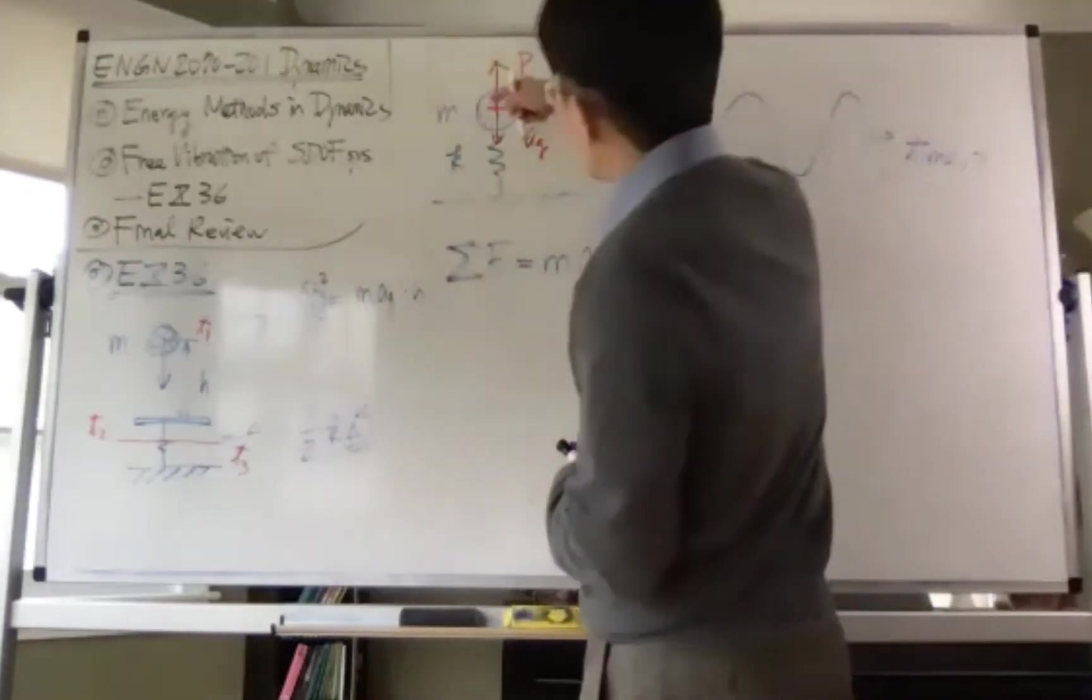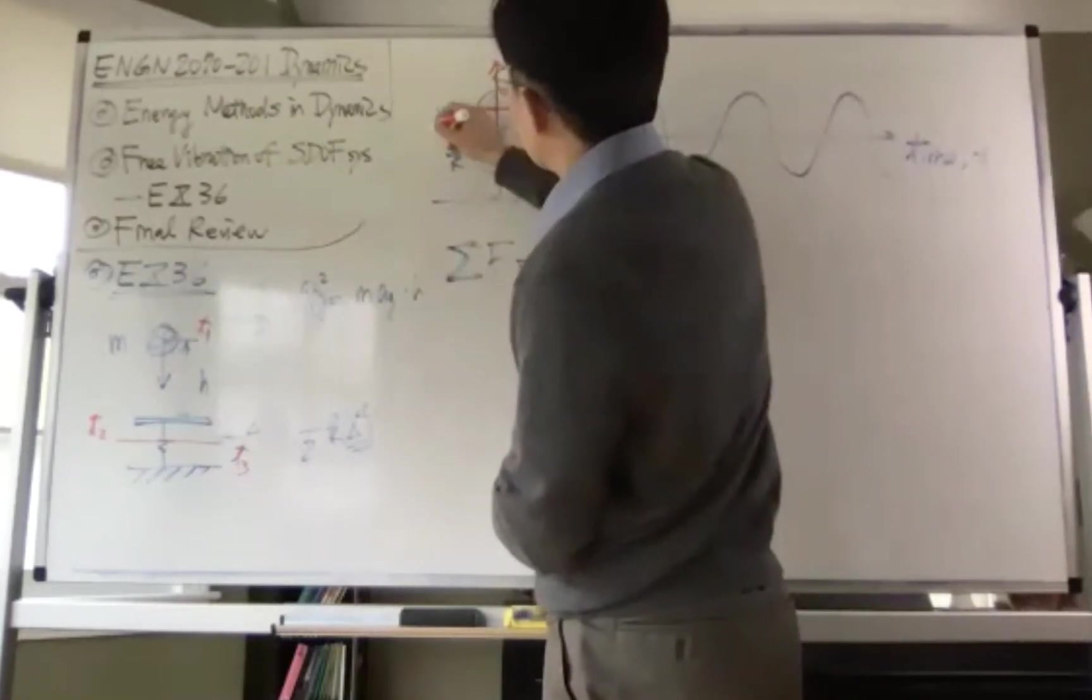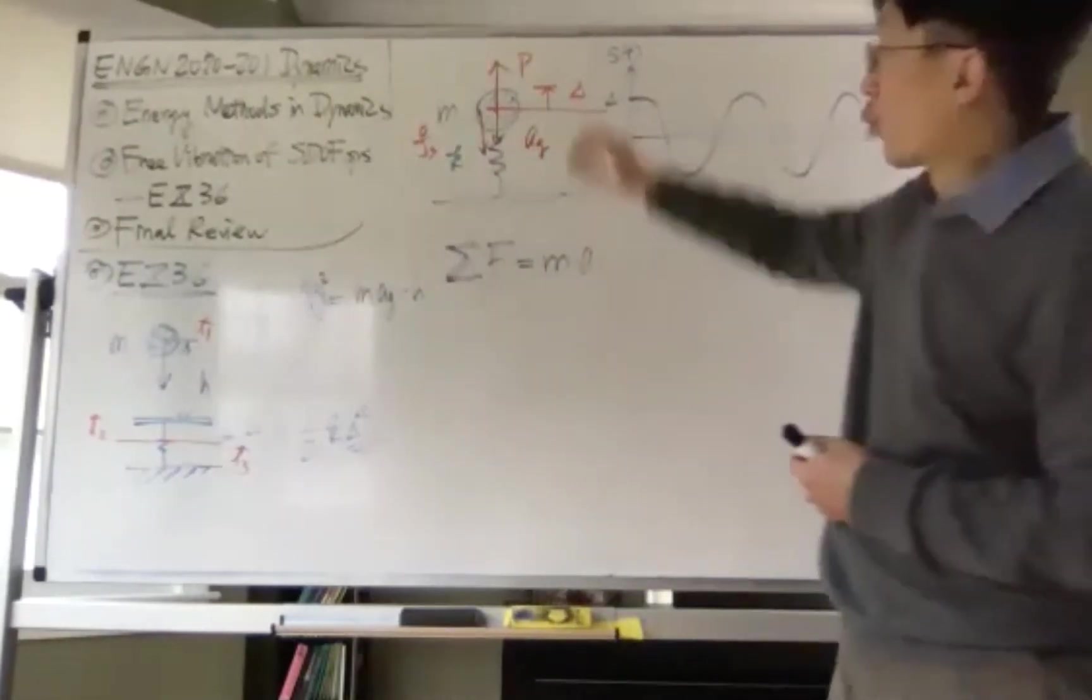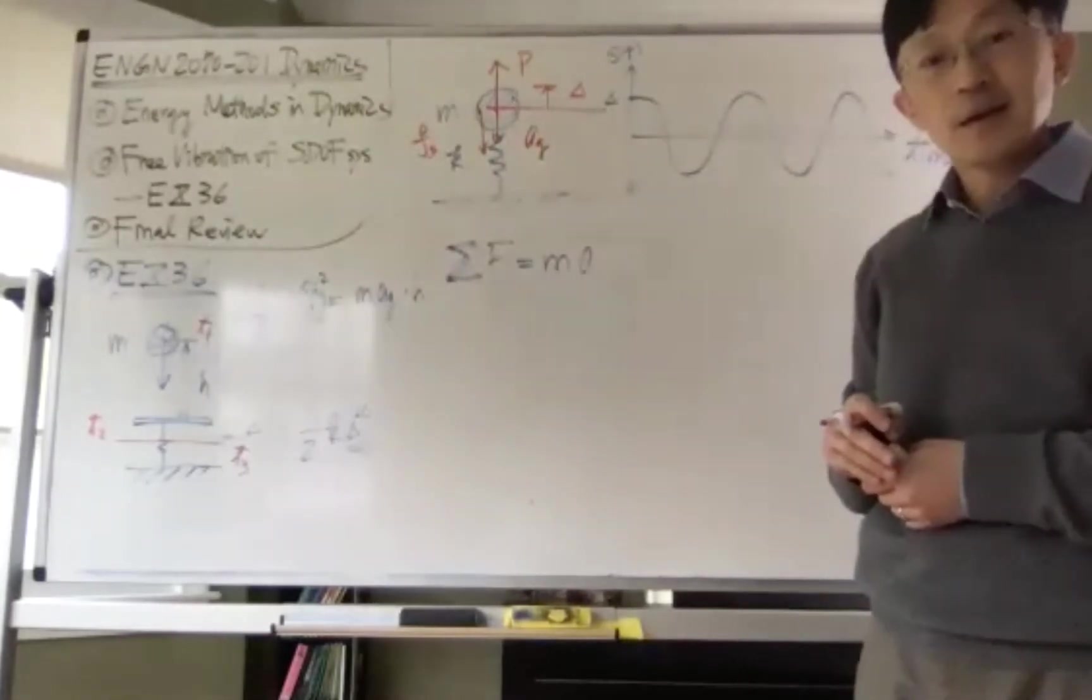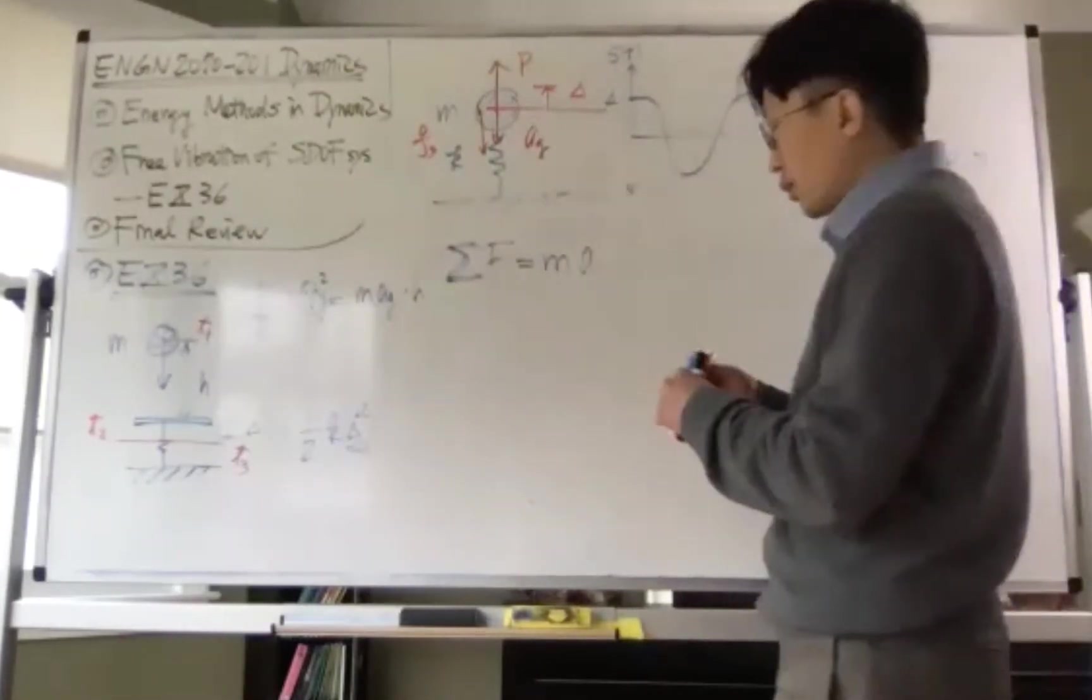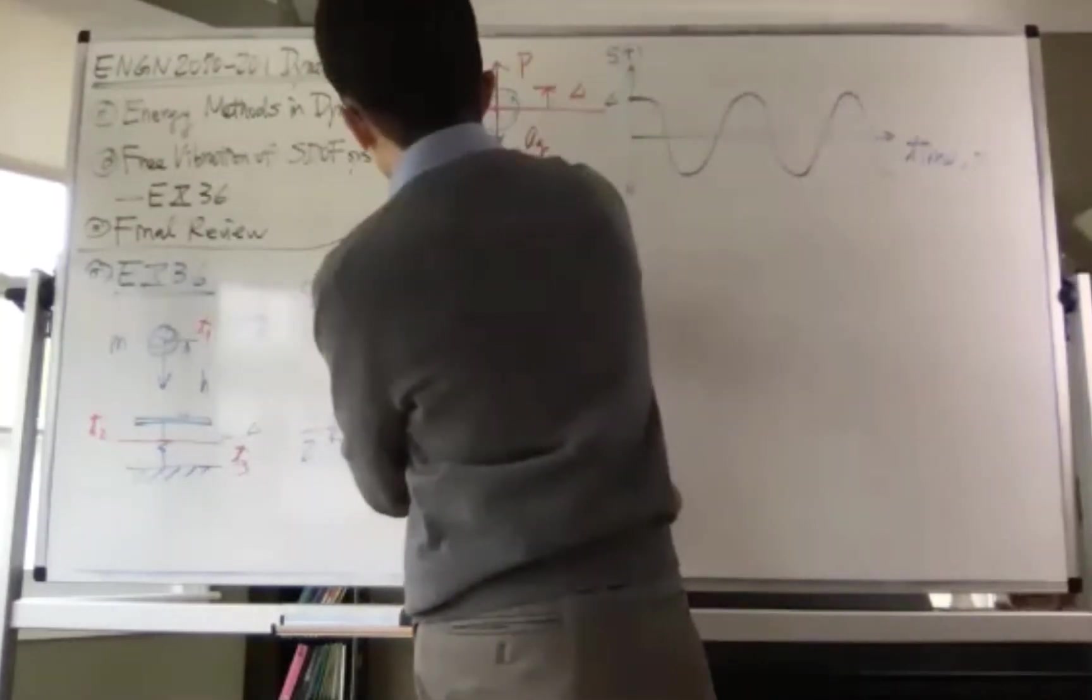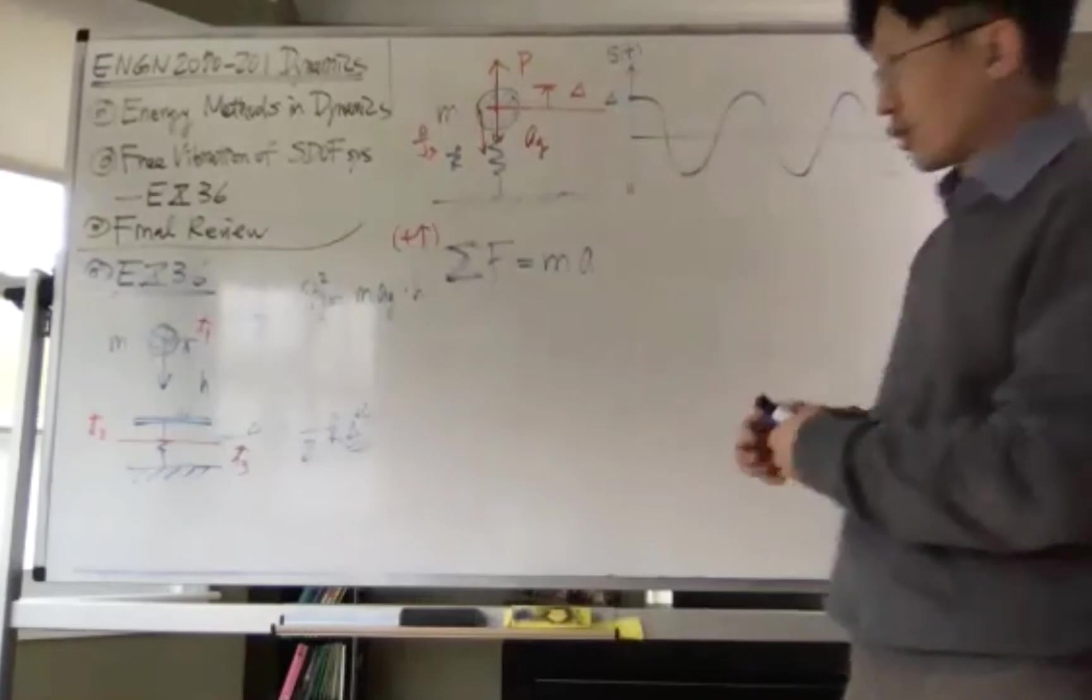Therefore, when the force is, when the P is pulling up, the k must be acting down. You can call it Fs. Right? And when this goes down, then the Fs must be acting up. So if you put a force equilibrium here, depending on which direction you want to set to be positive. If you say the upward direction is a positive force, then we put everything together.